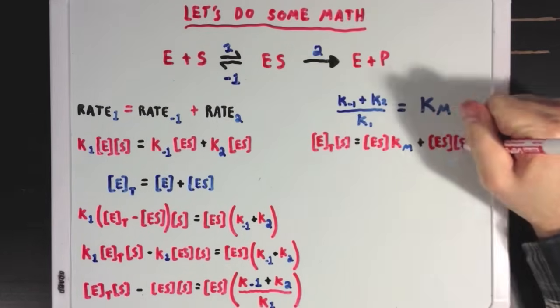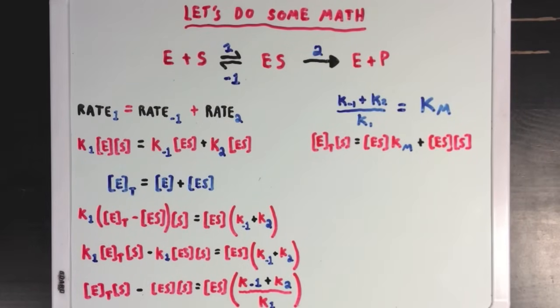So, in this next line, I've done two things. First, I've thrown in that Km value that I just mentioned, but I've also added ES times S to both sides of the equation, and thus moved it from the left side to the right.